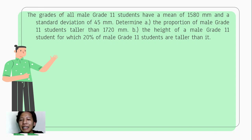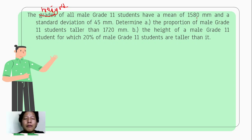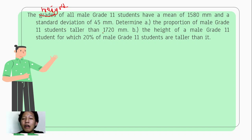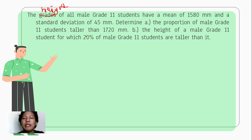Let us have another example. The heights of all male Grade 11 students have a mean of 1580 millimeters and a standard deviation of 45 millimeters. We need to determine: (a) the proportion of male Grade 11 students taller than 1720 millimeters, and (b) the height for which 20% of male Grade 11 students are taller.